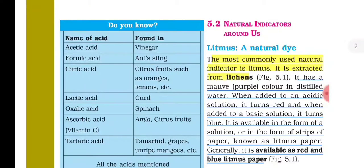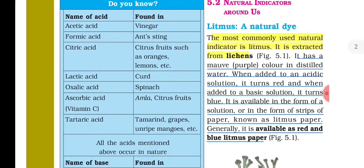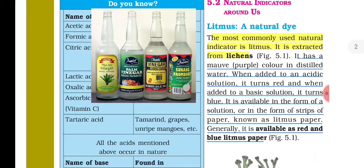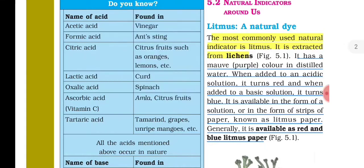Here in this table we have the name of the acid and where it is found. Acetic acid is found in vinegar — what we commonly call vinegar. Formic acid is found in ant stings. When an ant bites you, you feel irritation because of formic acid present in the ant's sting.